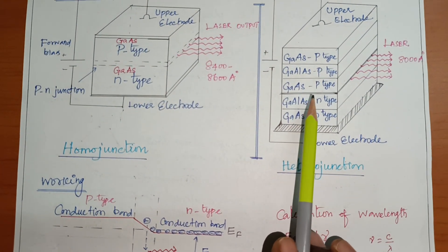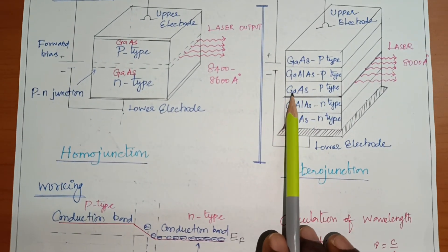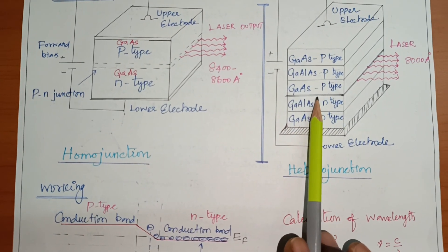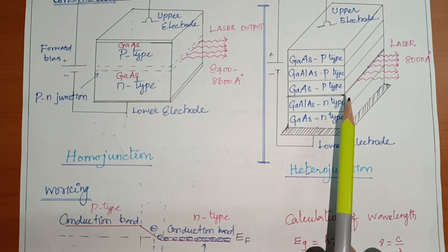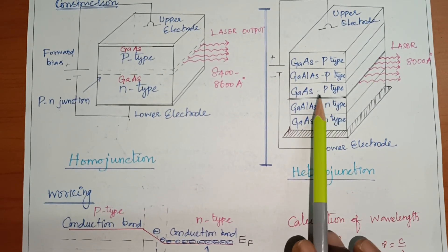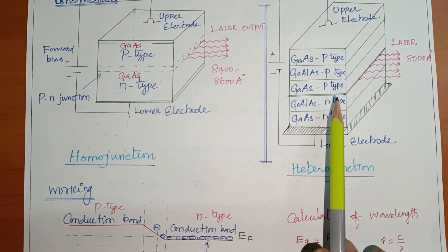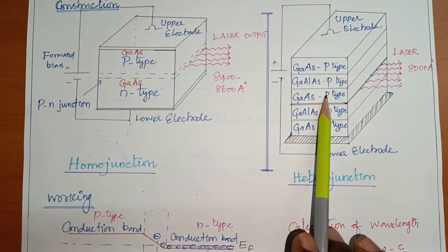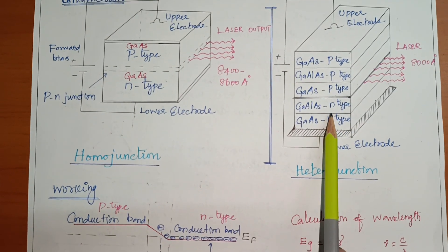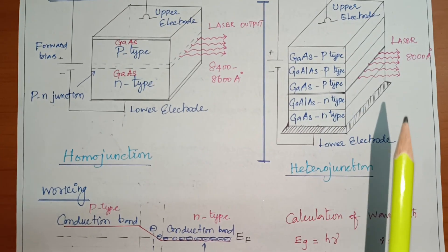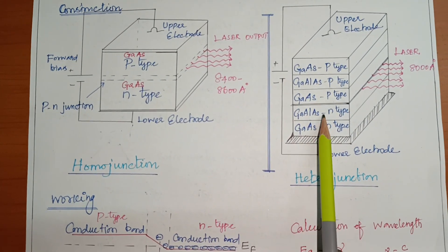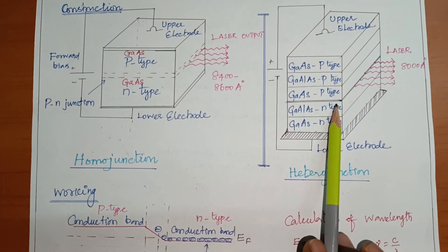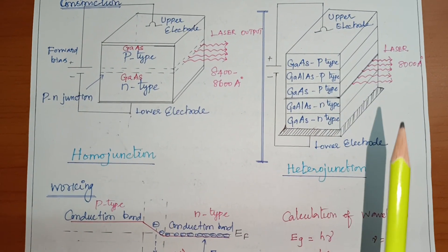The three components of the hetero junction laser are: active medium — gallium arsenide p-type and gallium aluminum arsenide n-type; pumping source — direct electric pumping via the p-n junction; and optical resonator — the p-n junction itself. Recombination occurs only between the third and fourth layers because that is where p-type meets n-type. The other layer pairs (1st–2nd: p-p, 2nd–3rd: p-p, 4th–5th: n-n) do not support recombination. The p-n junction of the third and fourth layers also acts as the optical resonator.